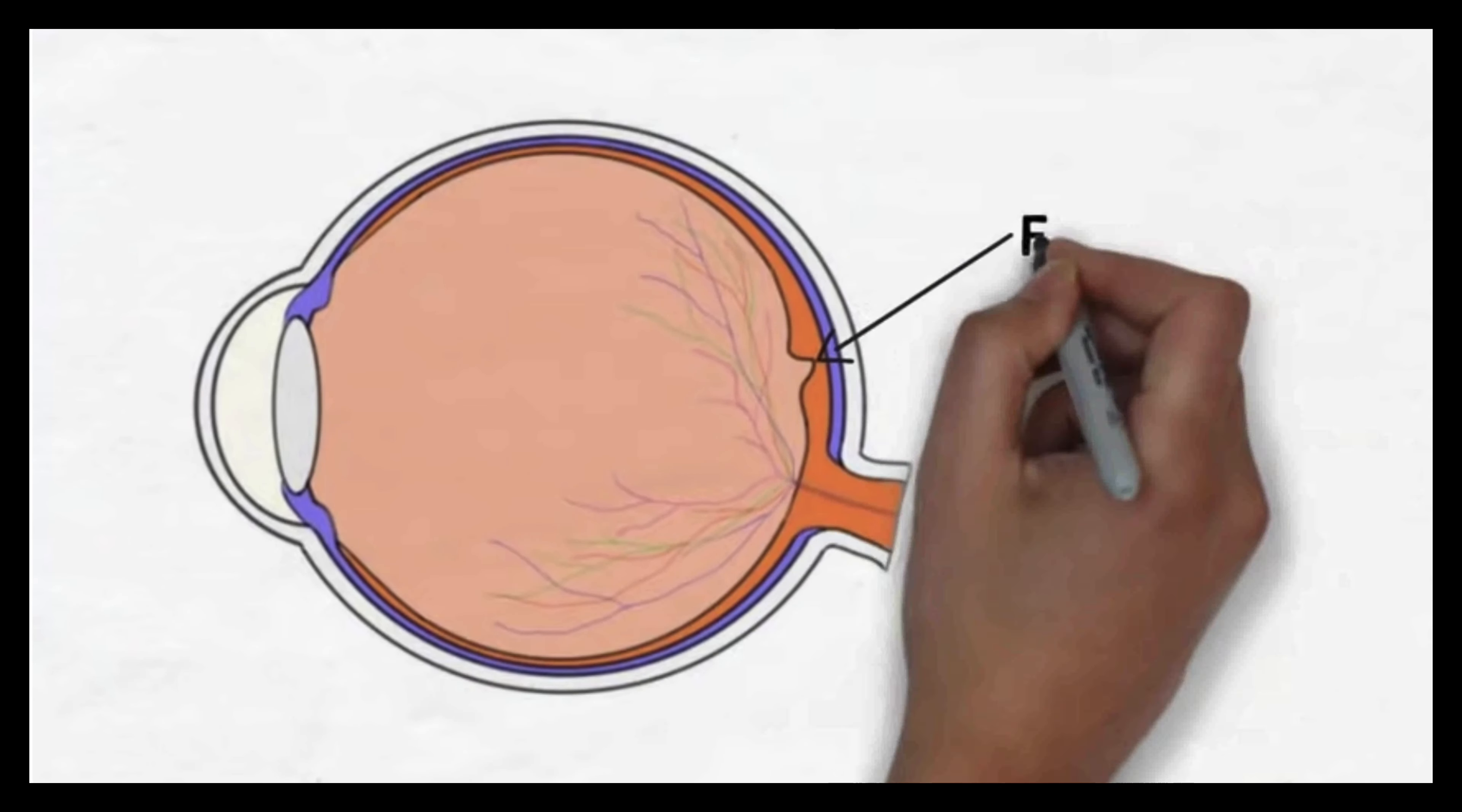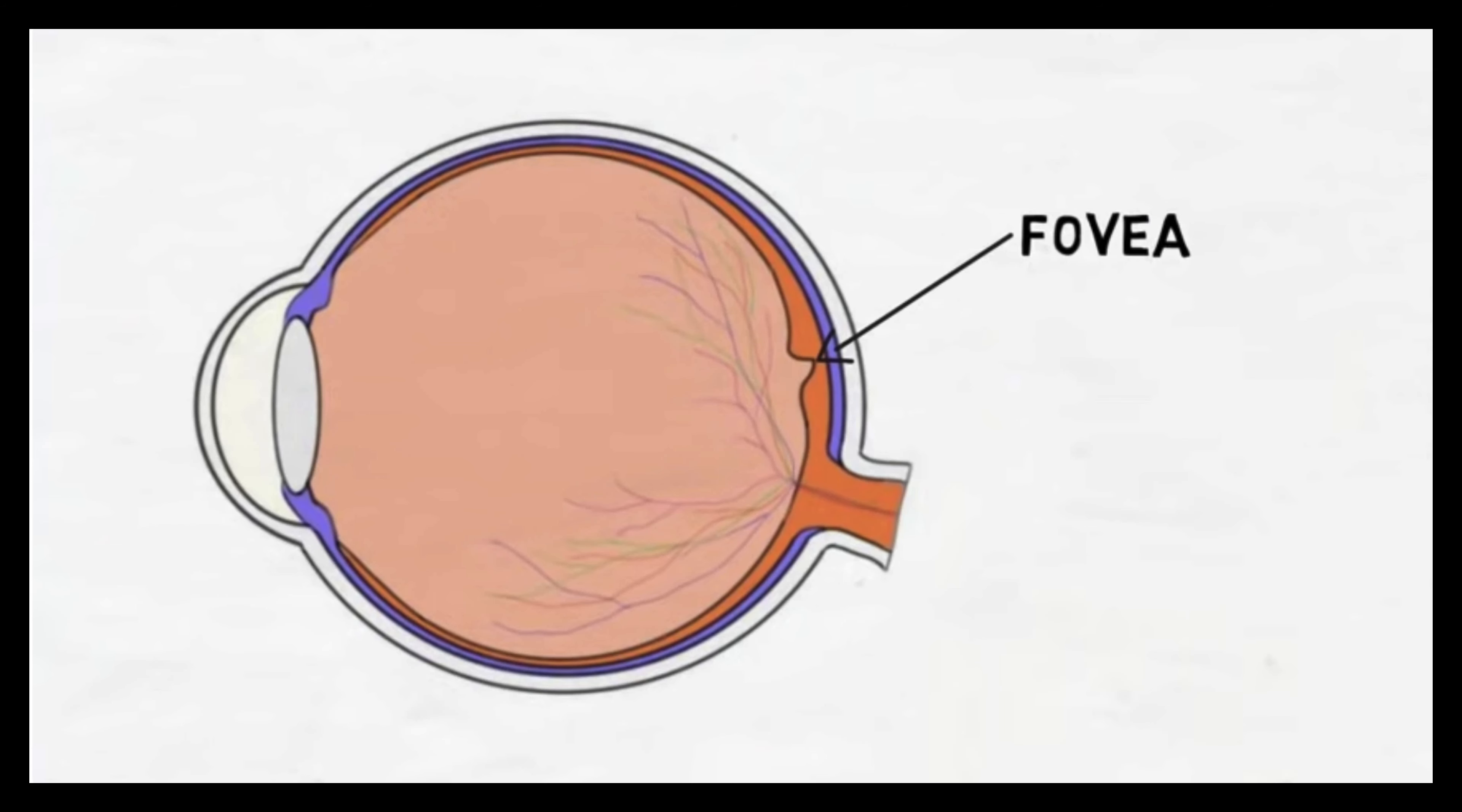In one area called the fovea, however, there are no rods but many cones. The fovea represents the area of our retina that provides our highest acuity vision and thus is at the center of our gaze.